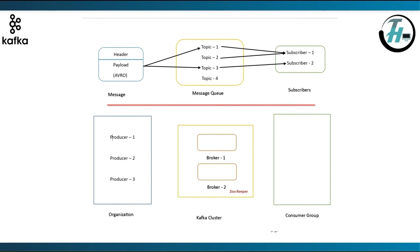Then we have consumer group. As the name suggests, it is a group of consumers acting as a single logical unit. And a consumer is the one that consumes or receives the message. Here I have taken three consumers: consumer 1, consumer 2 and consumer 3.